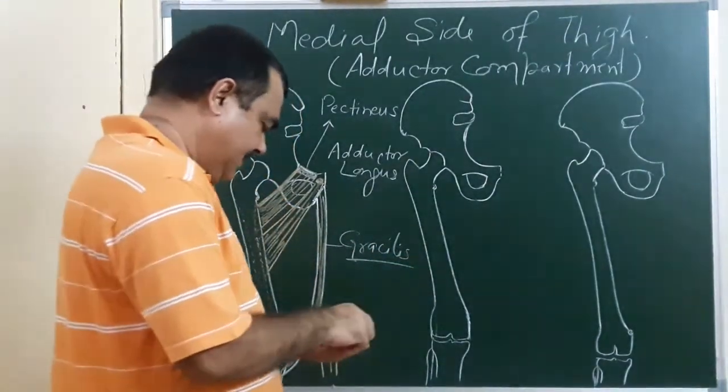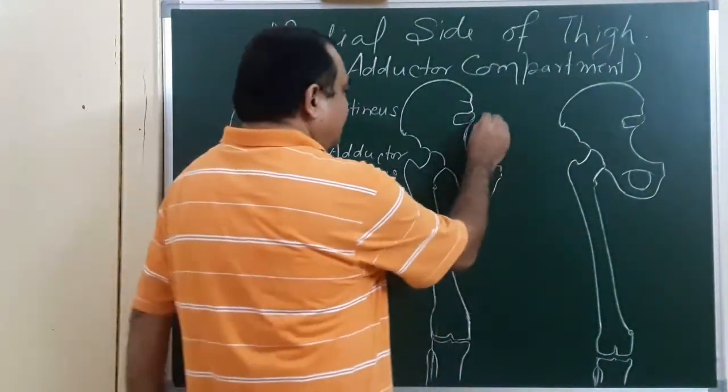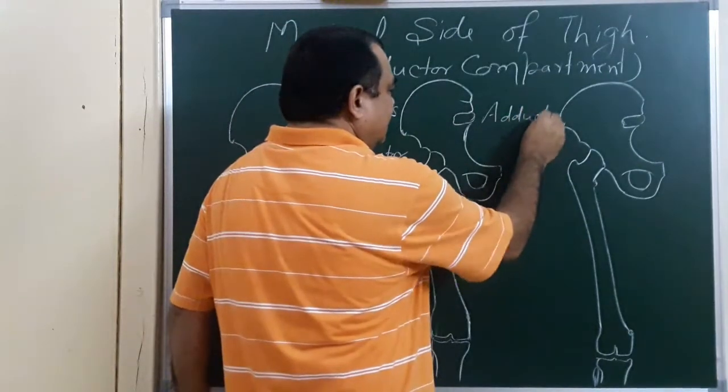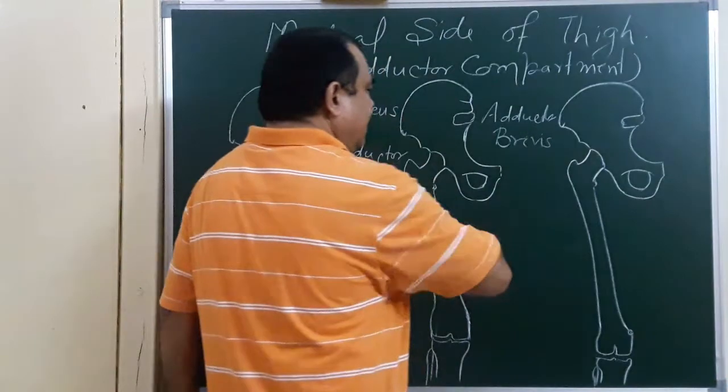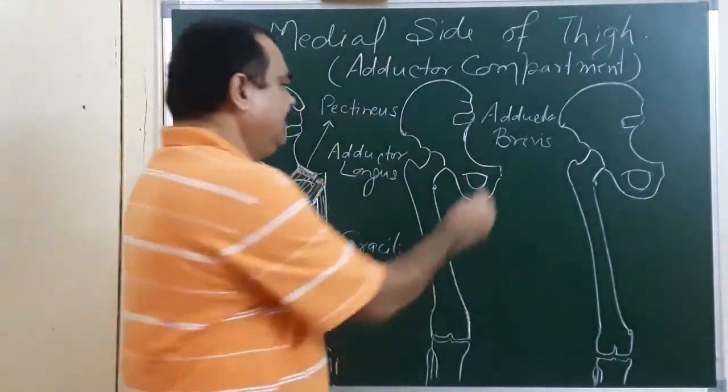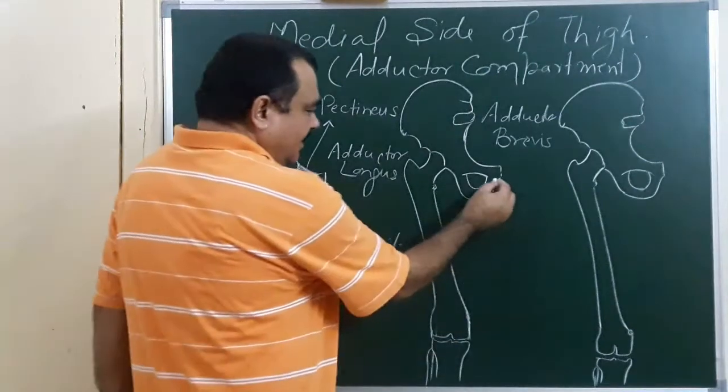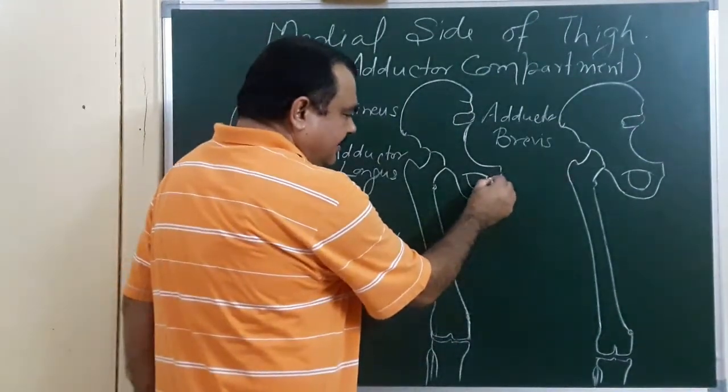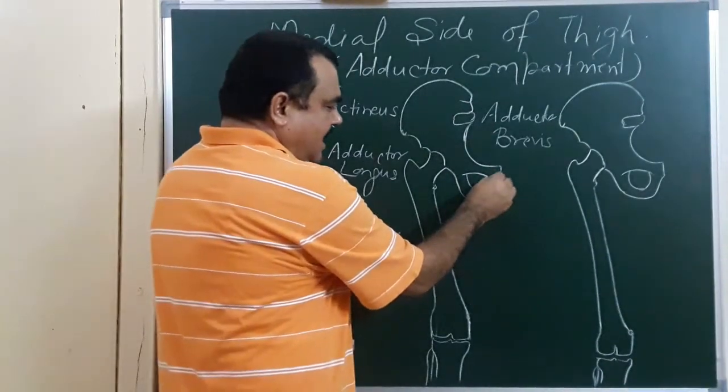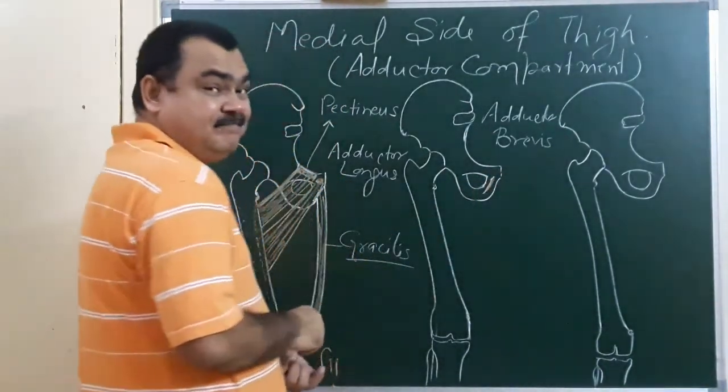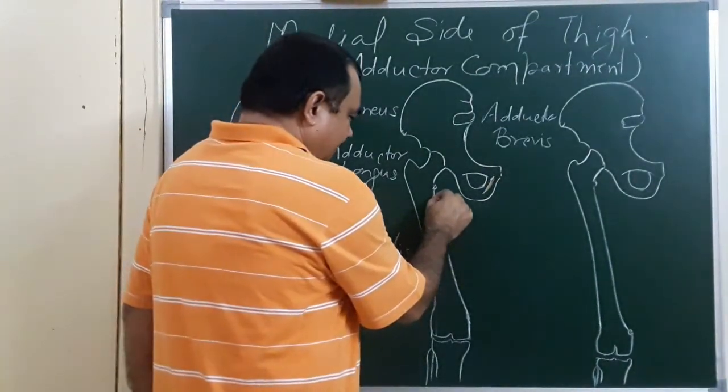Another muscle is adductor brevis. This adductor brevis takes origin from lower part of the body of the pubis and ischiopubic ramus from here, and inserted on the linea aspera.